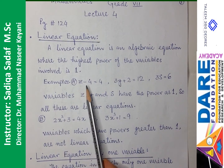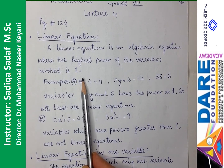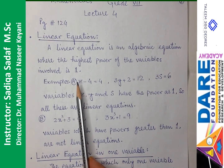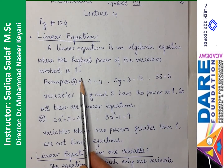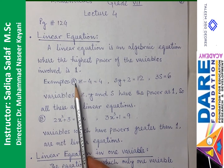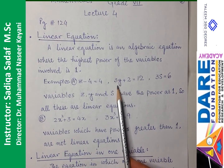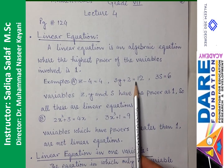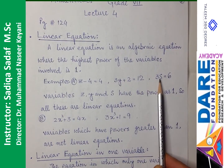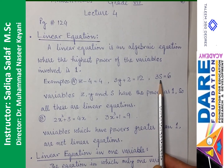Asan si example: z minus 4 is equal to 4. Ismein variable z hai aur z ki power 1 hai — jahan kuch nahin likha hota, wahan 1 hota hai. To z ki power 1 hai, isliye yeh linear equation hai. 3y plus 2 is equal to 12 — variable y hai, y ki power 1 hai, isliye yeh bhi linear equation hai. 3s is equal to 6 — s variable hai, highest power 1 hai, isliye yeh bhi linear equation hai.